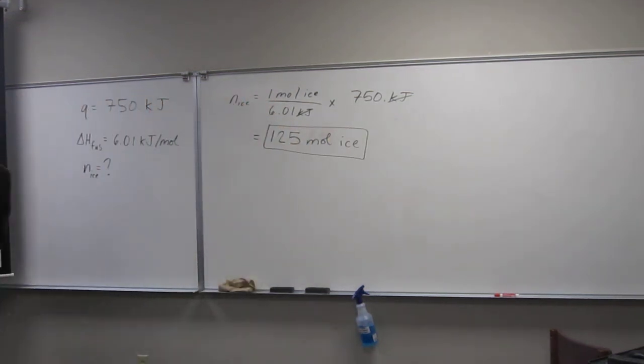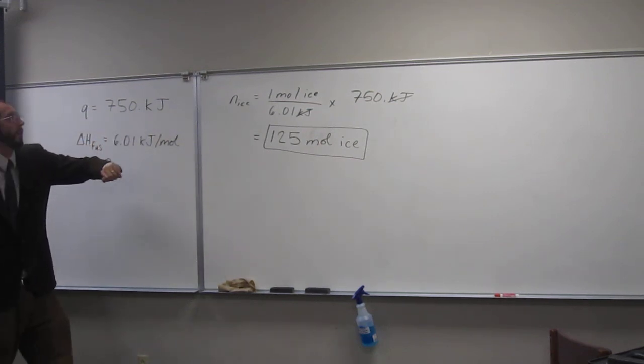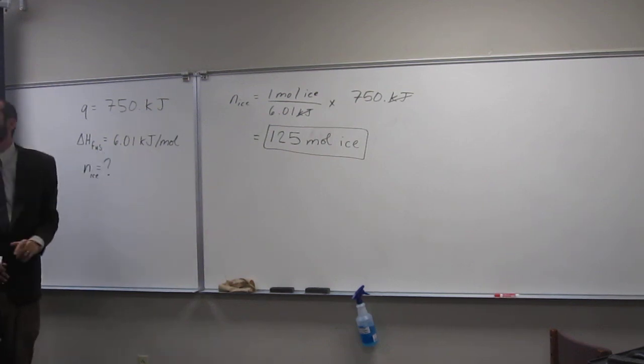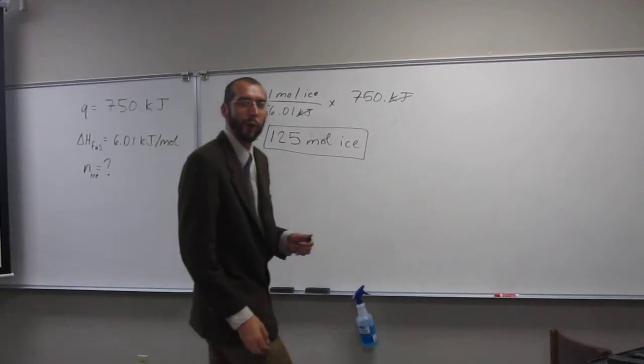Okay, so that's how many moles of ice that you could melt with 750 kilojoules of energy provided the delta H of fusion was 6.01 kilojoules per mole. Does that make sense? Any questions on that one? Do you want to kill that one?